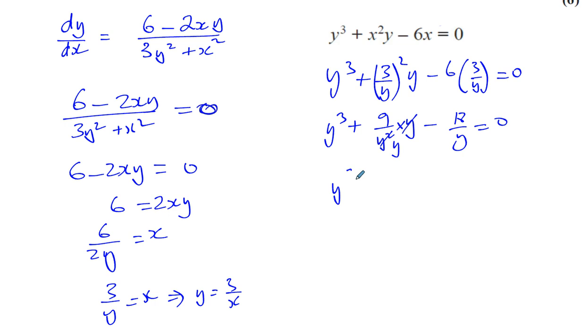The y here will cancel, so you've got y cubed plus 9 over y minus 18 over y. You can see that's going to give you one denominator.